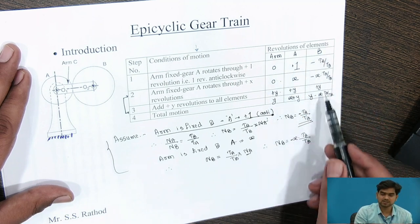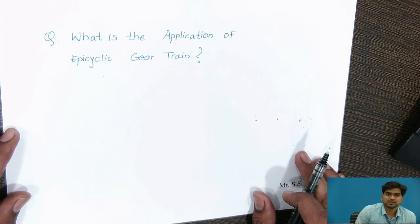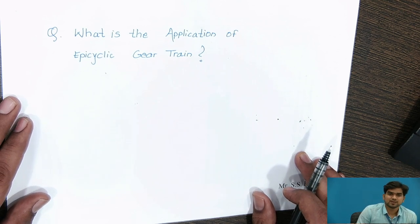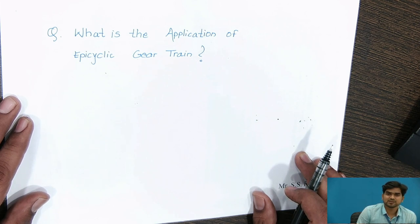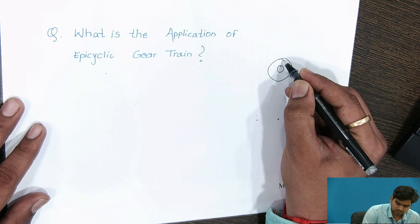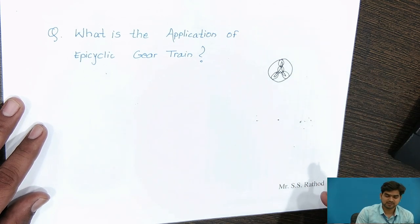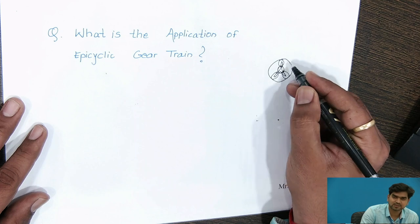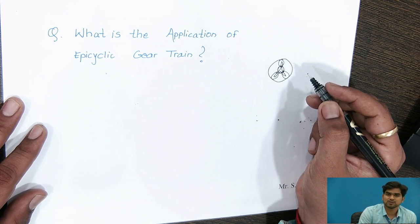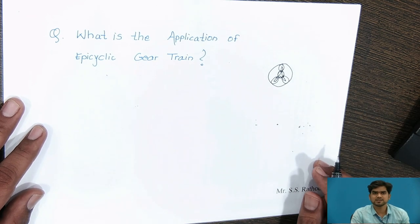By considering this table, if any one term is known, we can easily find the speed of the other element. One question is: what is the application of epicyclic gear train? Generally, in the case of the differential gear box, we use epicyclic gears. Such a gear arrangement is called epicyclic gear train — around one gear, other gears rotate. It is also used in the back gear of the lathe machine, and in Merton Navy machines. There are many applications of the epicyclic gear train.